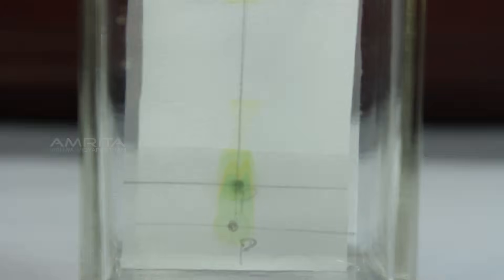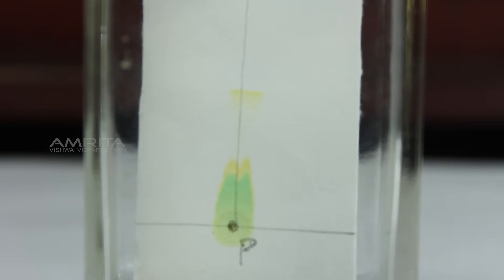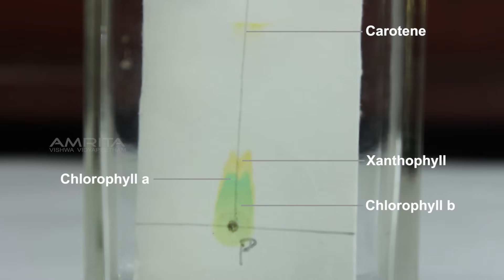Notice the rising solvent along with the leaf extract. As the solvent has risen, you will notice different spots of the pigments such as carotene, xanthophyll, chlorophyll A and chlorophyll B of spinach leaf extract on the filter paper.